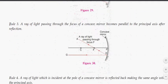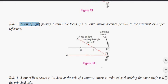Rule number 3: A ray of light passing through the focus of a concave mirror becomes parallel to the principal axis after reflection.